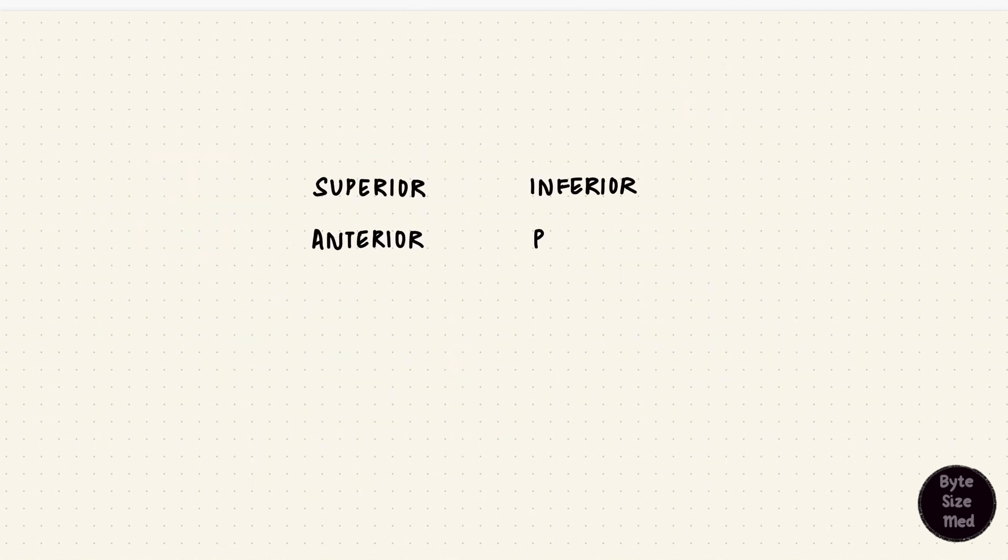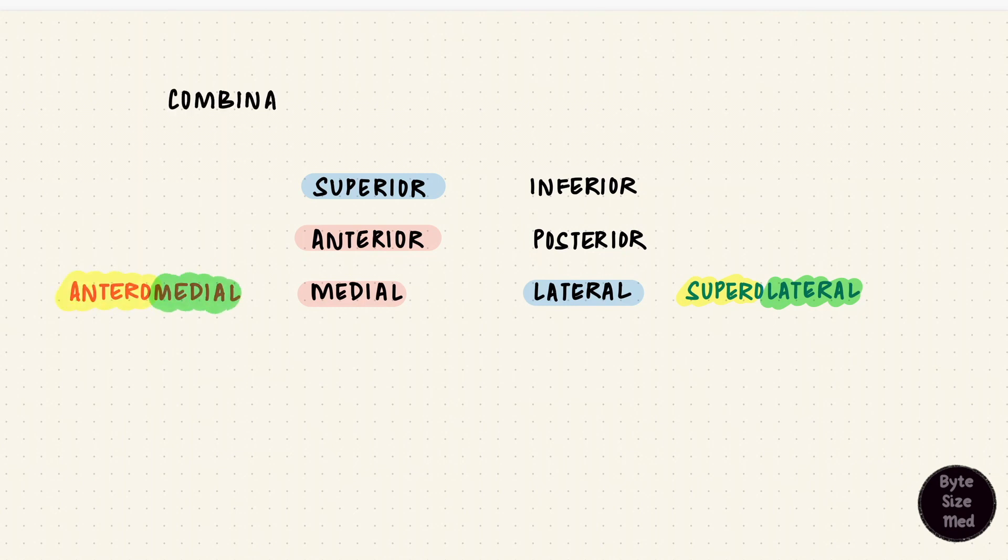These terms can be mixed and matched. Obviously not within the same group, because they're opposites, so superoinferior would make absolutely no sense. But superolateral, or inferomedial, inferolateral, anterosuperior, posterolateral, all this stuff makes sense. Superolateral would be above and away from the midline. Anteromedial would be in front and towards the midline. Like this, terms can be combined.